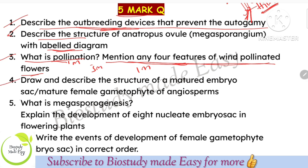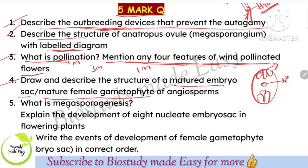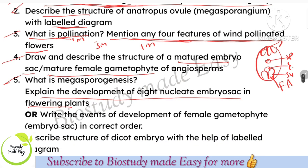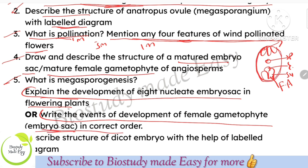Draw and describe the structure of a mature embryo sac — also asked as 'mature female gametophyte.' Both questions have the same answer. Draw the diagram neatly with labelings: antipodals, polar nuclei, synergids, filiform apparatus, and egg cell. Note: female gametophyte means embryo sac; ovule means megasporangium — don't confuse these terms.